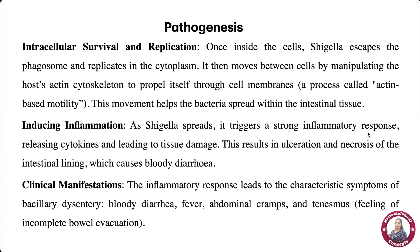As it spreads, Shigella triggers a strong inflammatory response by releasing cytokines, which leads to tissue damage, causing ulceration — a break in the intestinal lining — and necrosis, meaning death of cells. This ulceration and necrosis of the intestinal lining is the main cause of bloody diarrhea.